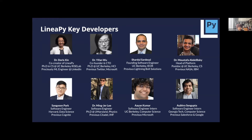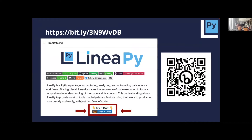Before we dive into the demo, I'd like to introduce the LinearPy developer team. Ifan, Doris, Mustafa, and I are from the UC Berkeley RISE Lab, which also created Apache Spark. Shardul comes from a software engineering and operations research background, and both Minger and Sangyoon have been data scientists and data engineers themselves. My name is Ayan, and Obro and I are engineering interns for the summer. Today Sangyoon will be leading the demo, going through a step-by-step API basics notebook. You can follow along by scanning the QR code or finding the Colab button on our GitHub repo readme.